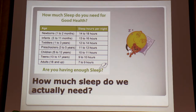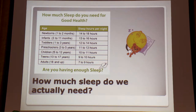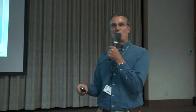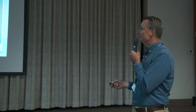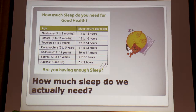How much sleep do we need? There's a lot of controversy, especially with teenagers. Adults need seven to nine hours — eight is the magic number. Newborns need about 20 hours a day. Infants need 13 to 16, toddlers 12 to 14, and it just goes down until we're adults at seven to nine.